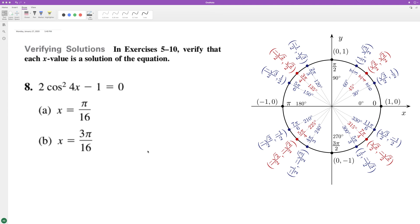To prove that these values for x satisfy the equation above. Before we even look at the unit circle, we're multiplying whatever value we have by four. In the first case for (a), x = π/16, so 4x equals π/4.